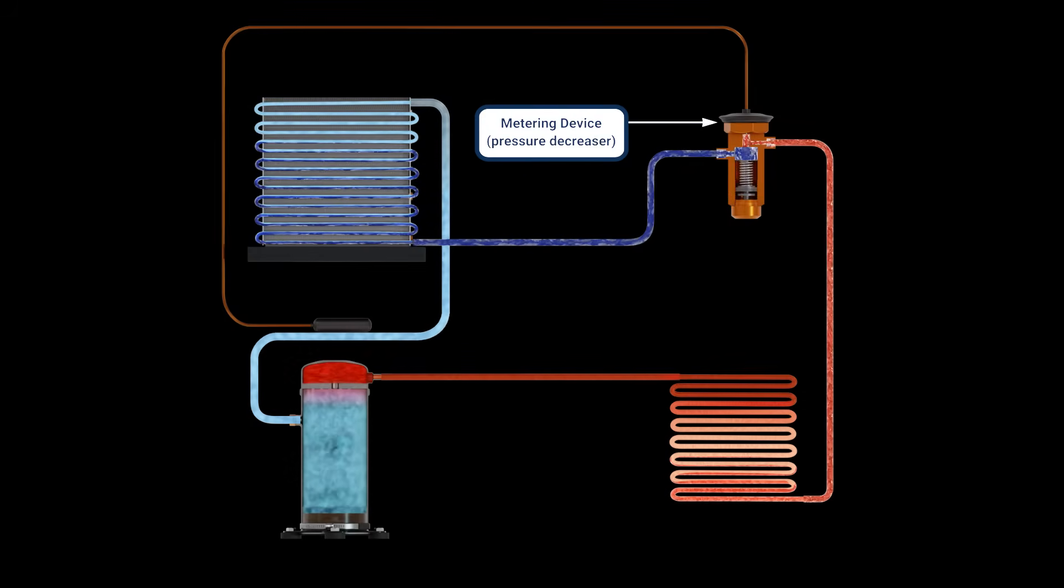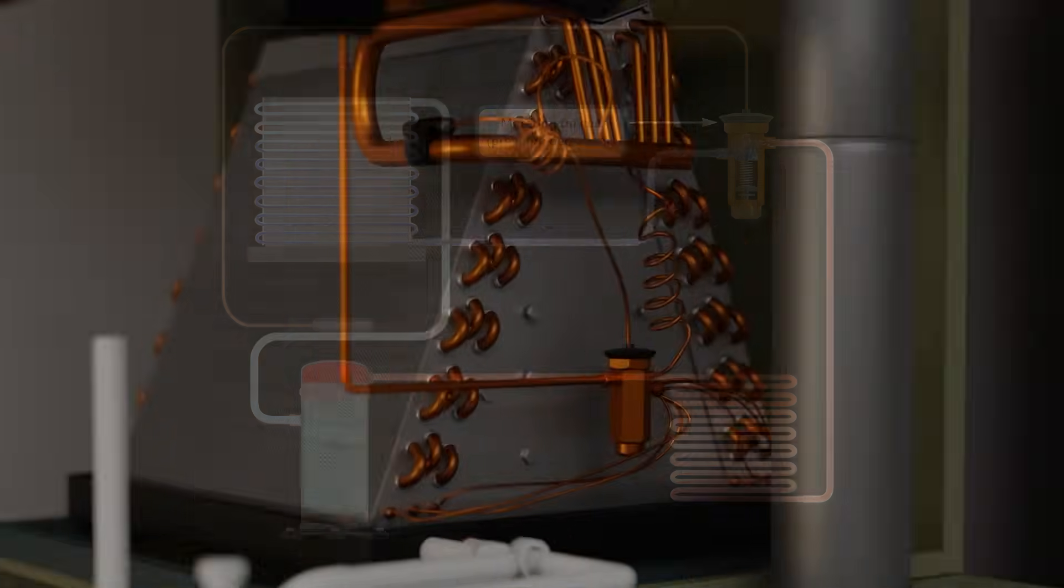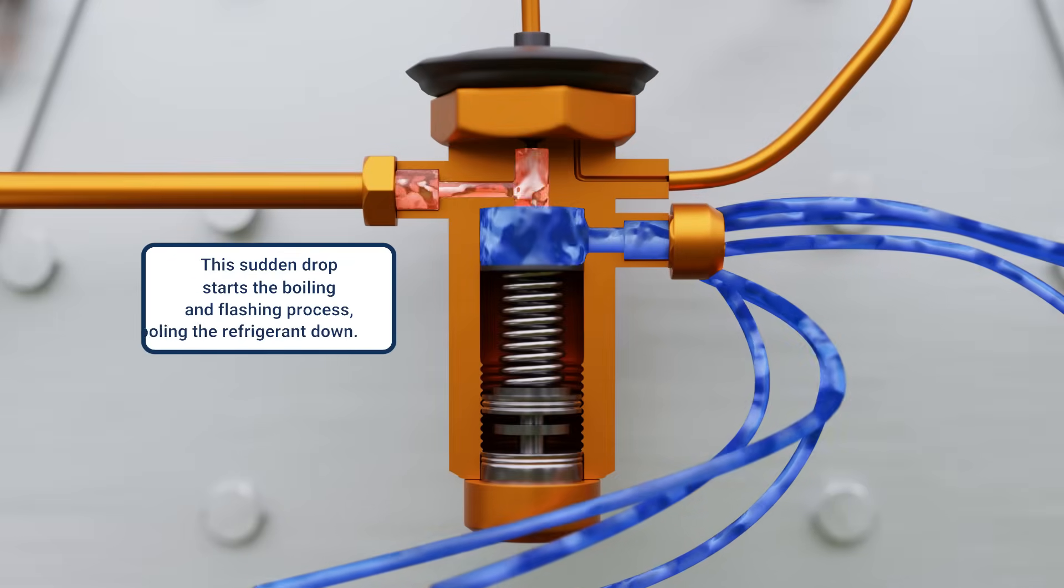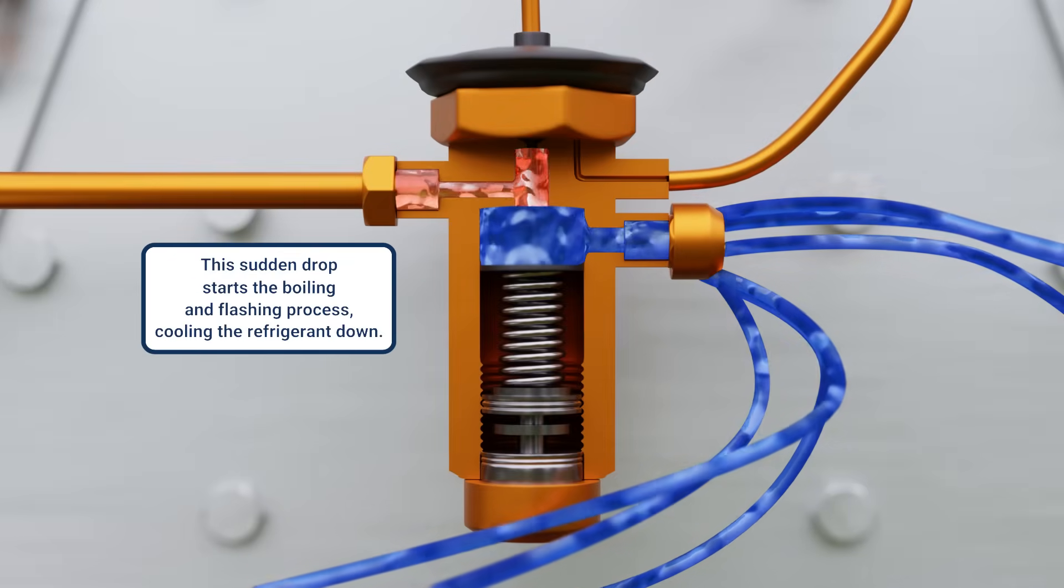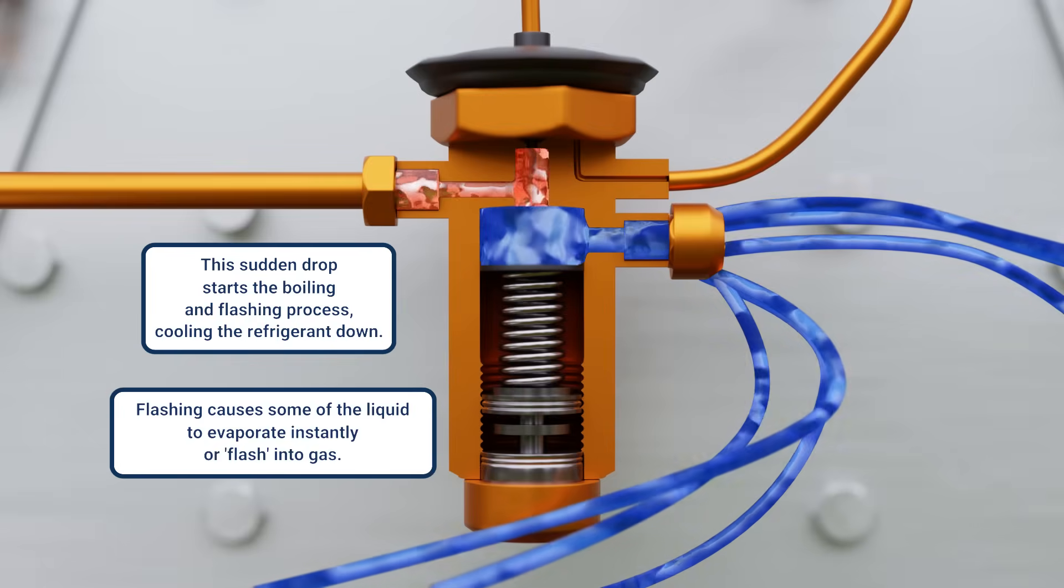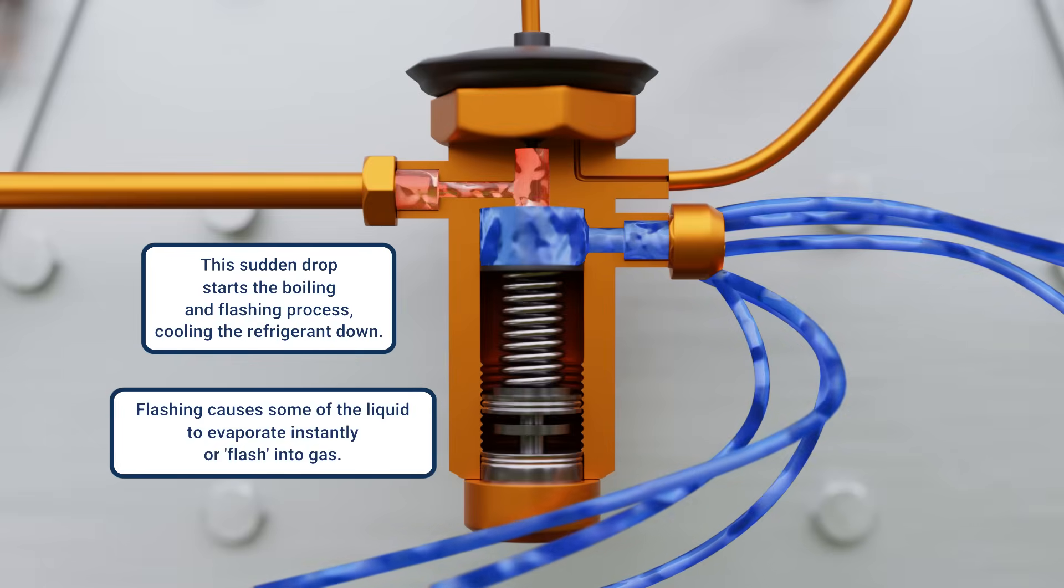The metering device then drops the pressure of the refrigerant quite dramatically. This sudden drop starts the boiling or flashing process. This cools it down even further and prepares it to enter the evaporator where the real magic happens.